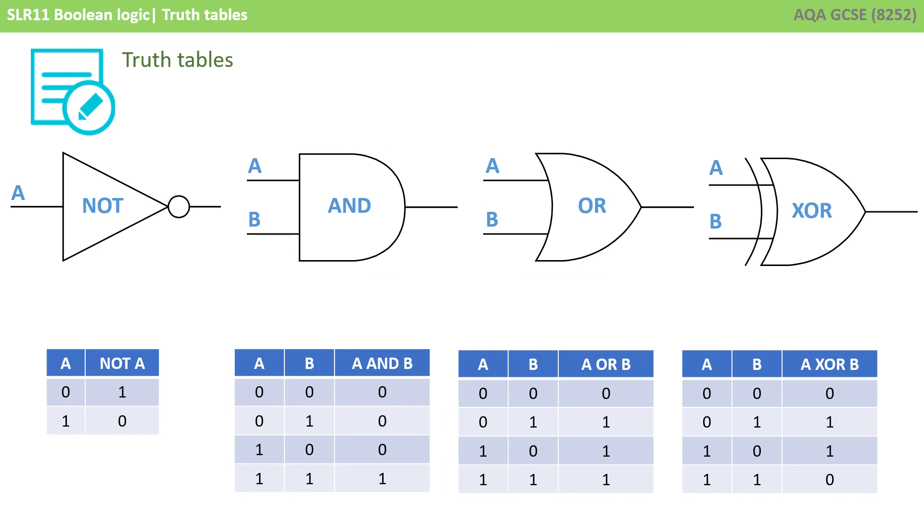So just as a quick recap, here are the four logic gate symbols that you need to know about for the GCSE exam, along with their associated truth tables.